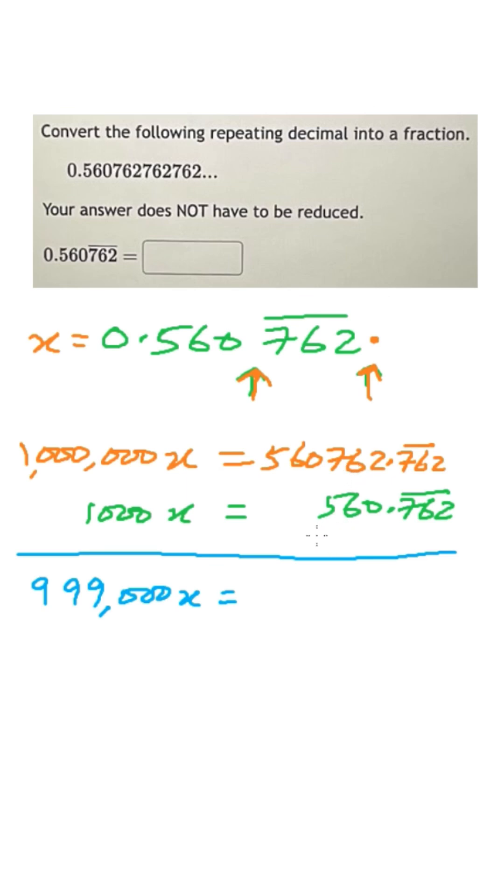Do the subtraction yourself. The answer will be 560202, and this part and this part, they are equal, so there will be nothing after decimal.